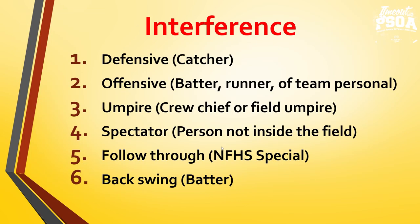The main topic is interference. First will be defensive interference — catcher. Then we'll go into offensive interference: the batter, the runner, team personnel. Umpire interference — the crew chief behind the catcher, the field umpire. Spectator interference — a person not inside the field. Follow through interference, which is an NFHS special terminology. Backswing with the batter. And then we will have a bonus one with coaches interference.